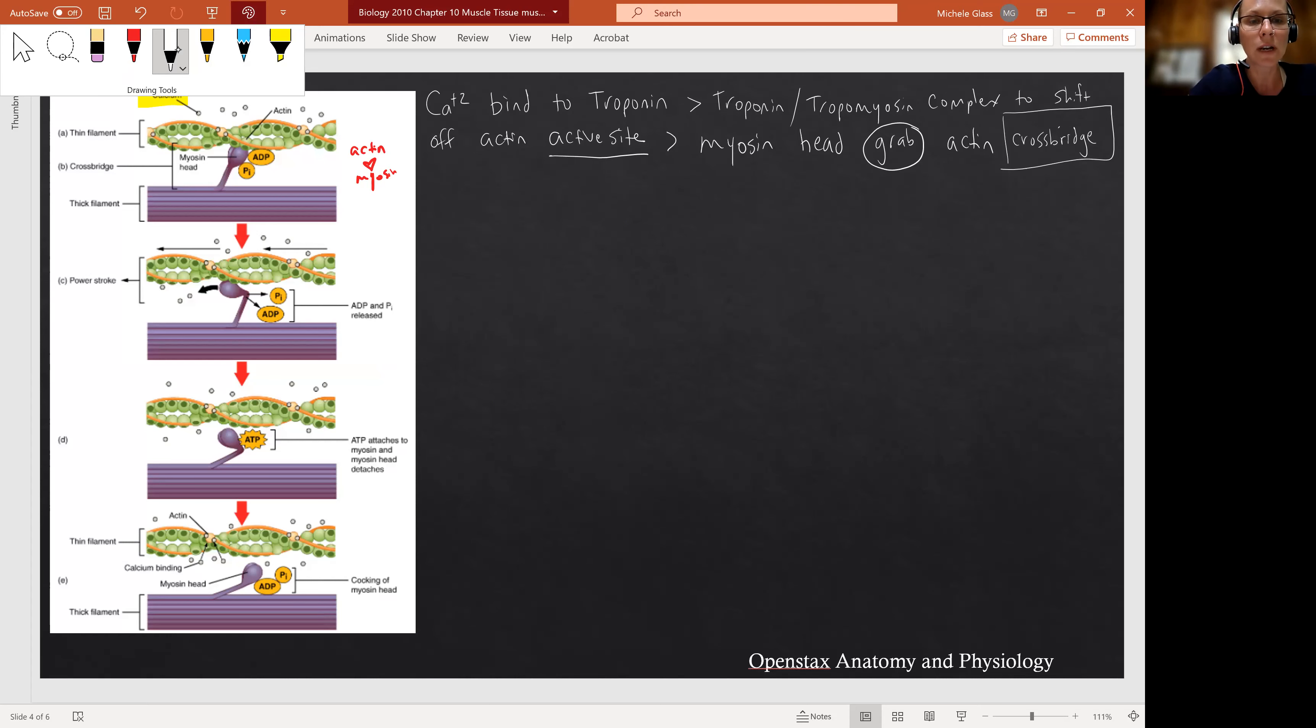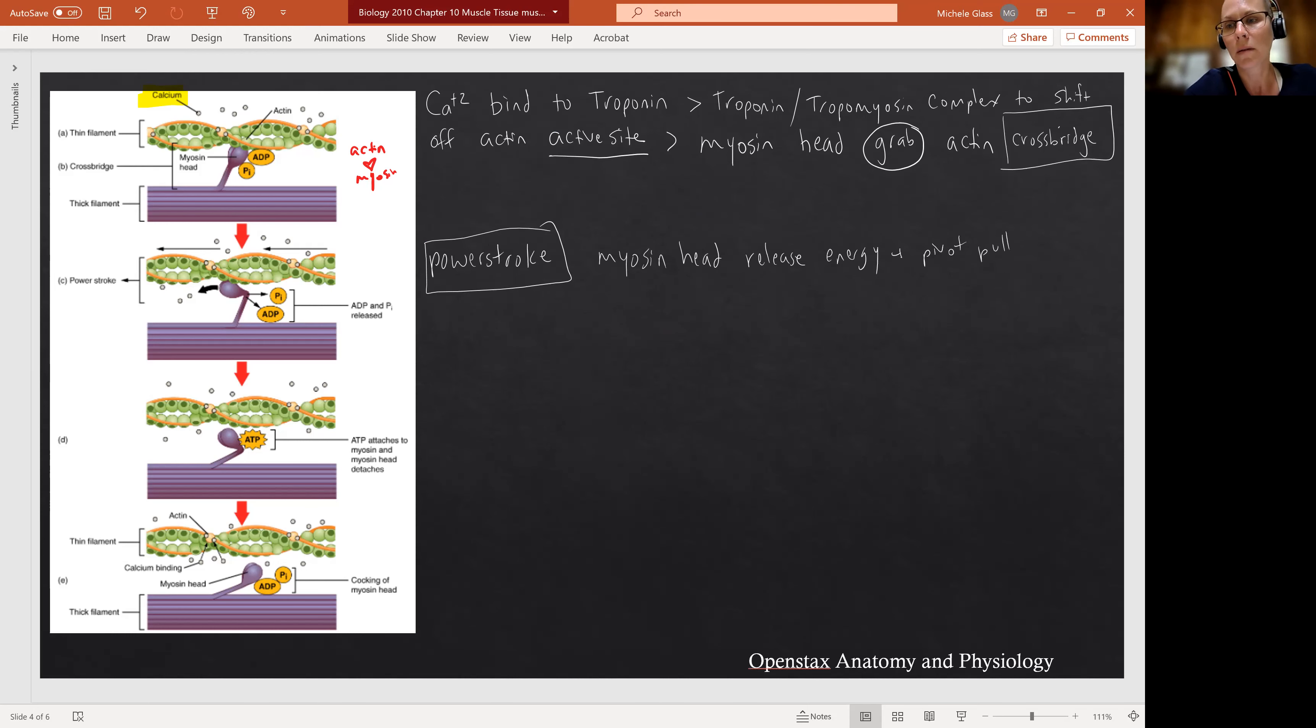And the next picture, what we see is what's described as the power stroke. So the power stroke is talking about when the myosin head is going to release the energy. Because it was cocked, it was energized. It's going to release the energy, and it's going to pivot, pulling the actin toward the M line. M line, remember, is the middle of the sarcomere. So this is described as the sliding filament theory of muscle contraction. So the myosin head reaches up and grabs the actin, releases that stored energy, does a pivot, and when it does that, it's pulling that actin, that thin filament toward the M line. And notice then that the actin and the myosin are sliding across each other.